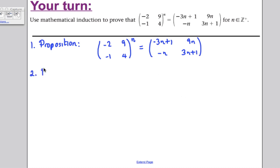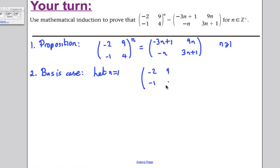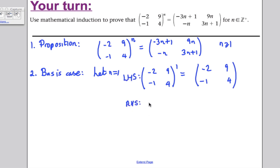Step 2: basis case for n greater than or equal to 1. Let n equal 1. The left-hand side, (-2, 9, -1, 4)^1, is simply (-2, 9, -1, 4). The right-hand side gives (-3+1, 9, -1, 3+1) = (-2, 9, -1, 4), which matches. Therefore, true for n equals 1.